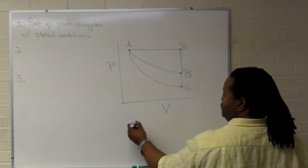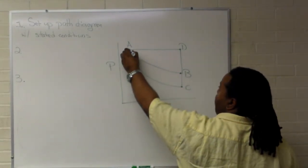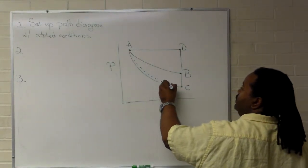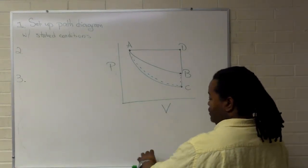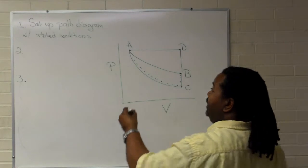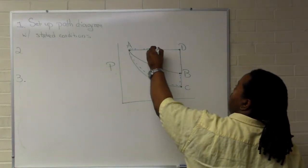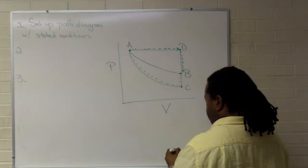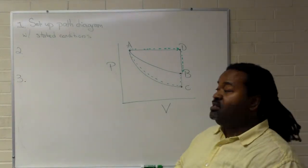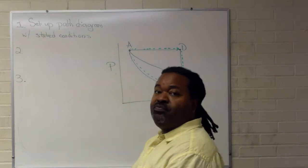So we have A to C to B as the second path, and we'll have A to D to B as the third path. Now once we have that done, we can move to the second step.